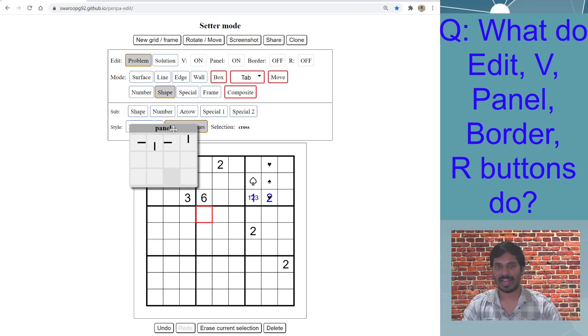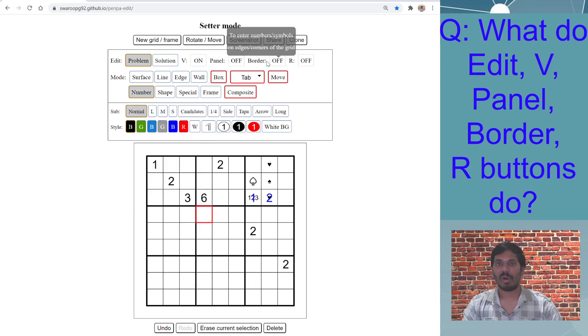The next I want to talk about is Border. Now there are a lot of puzzles like consecutive pairs, XV Sudoku, many others where you need to enter those shapes or numbers or symbols on the edges or on the corners of the grid. For that, you need to switch on this Border option on. Now you see that this selection square has become a smaller rectangle, and it allows you now to select these edges.